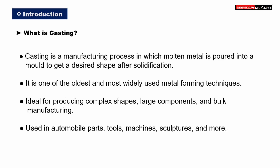Introduction. In this section, we'll understand what casting is. Casting is a manufacturing process in which molten metal is poured into a mold to achieve a desired shape after it solidifies. It is one of the oldest and most widely used metal forming techniques. This process is ideal for producing complex shapes, large components, and for bulk manufacturing.